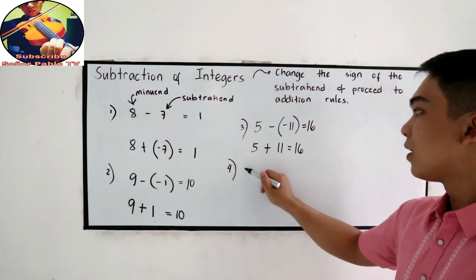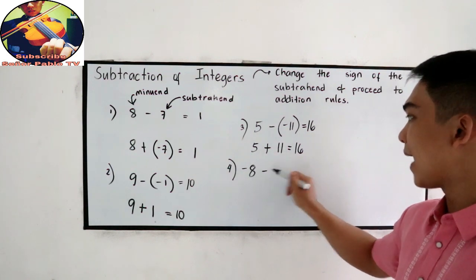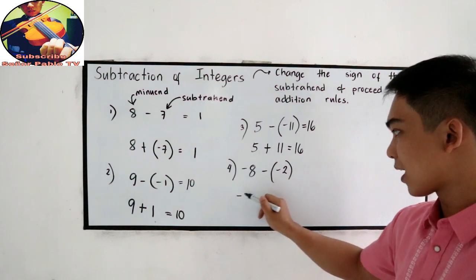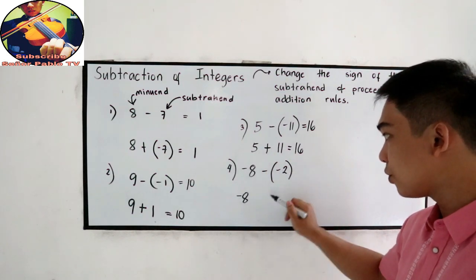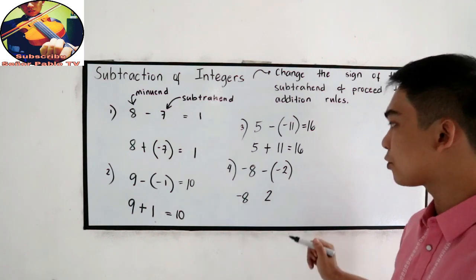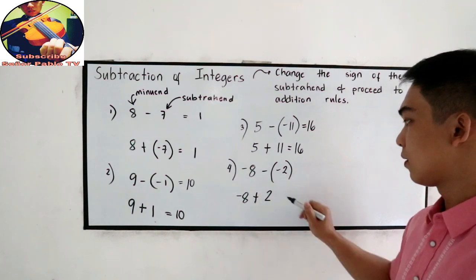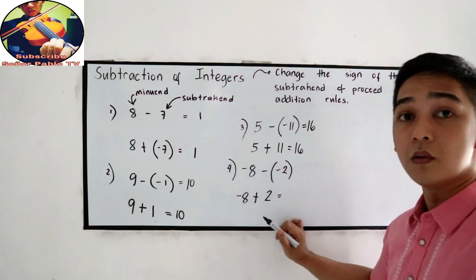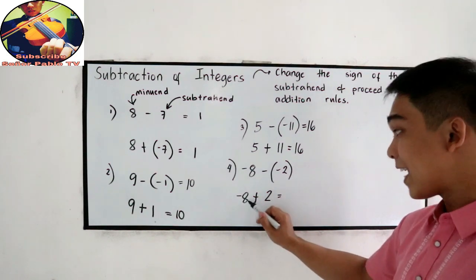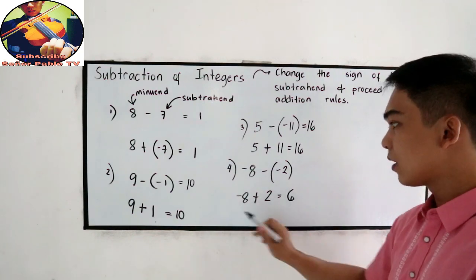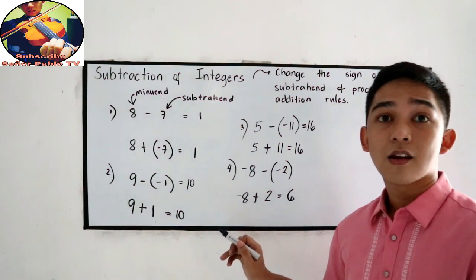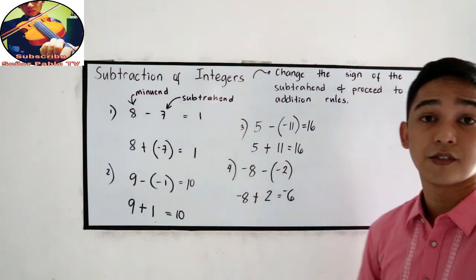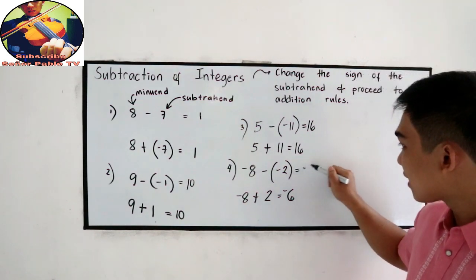Number 4: negative 8 minus negative 2. Copy the minuend — negative 8. Change the sign of negative 2 — that becomes positive 2. Then proceed to addition. They have unlike signs, so subtract: 8 minus 2 is 6. The greater absolute value is 8, so the answer is negative 6.